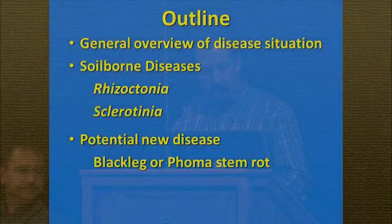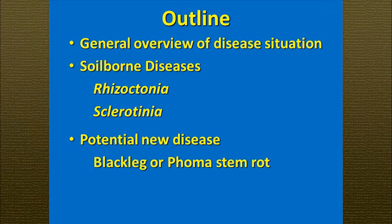What I'd like to do today is give a general overview of some of the disease problems we have in canola, focusing mainly on two diseases that are probably the most common: Rhizoctonia and Sclerotinia. But I also want to talk about a potentially new disease we may have emerging in this area, referred to as blackleg, also known as Foma stem rot.